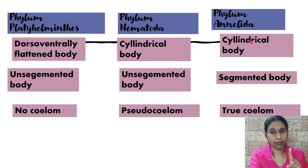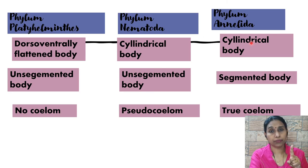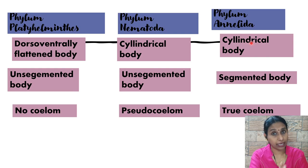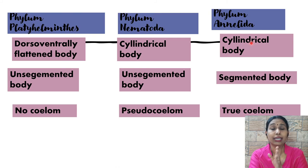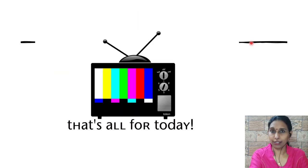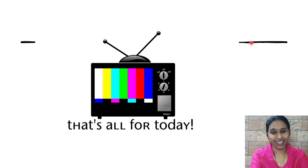Don't forget to learn the examples. Platyhelminthes: tapeworm, liver fluke, and planaria. Nematoda: roundworm, pinworm, and filarial worm. Annelida: leech, Nereis, and earthworm. I hope you have understood. We will meet again later. Keep learning.